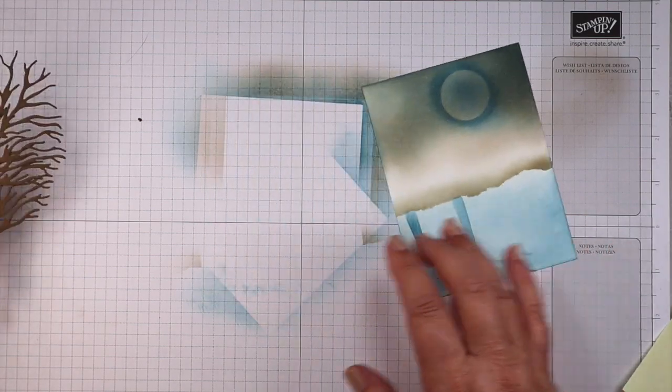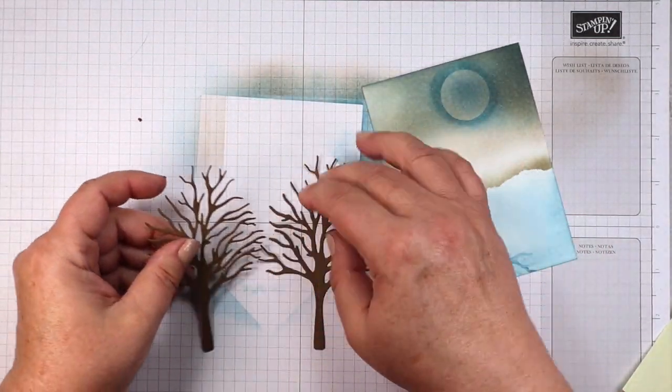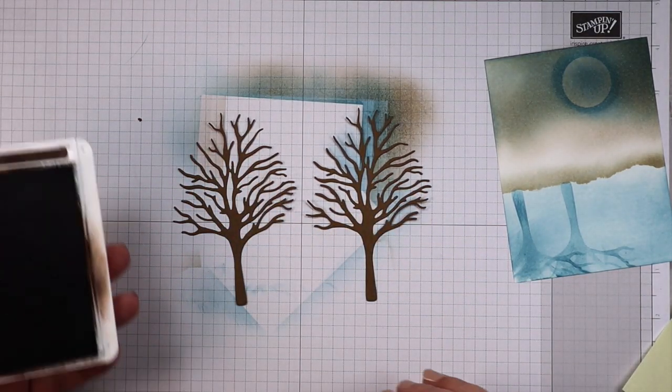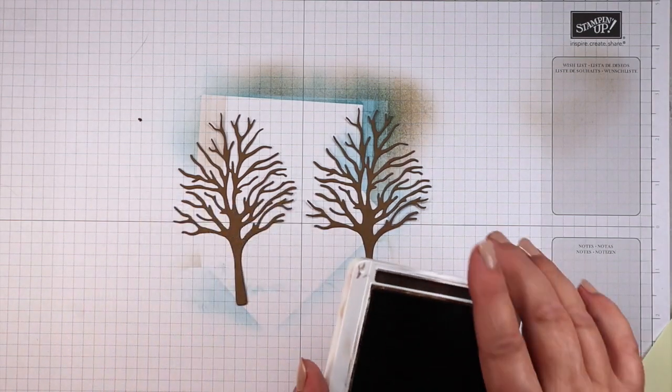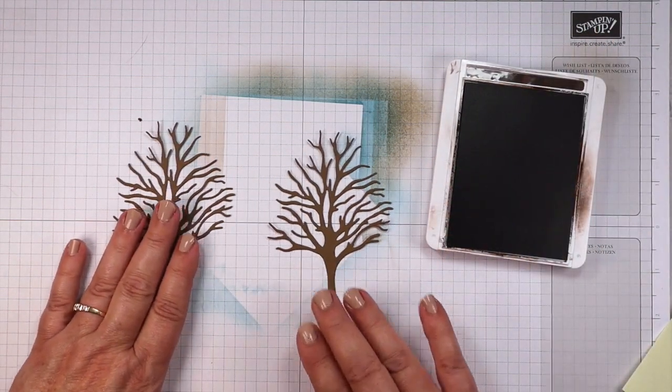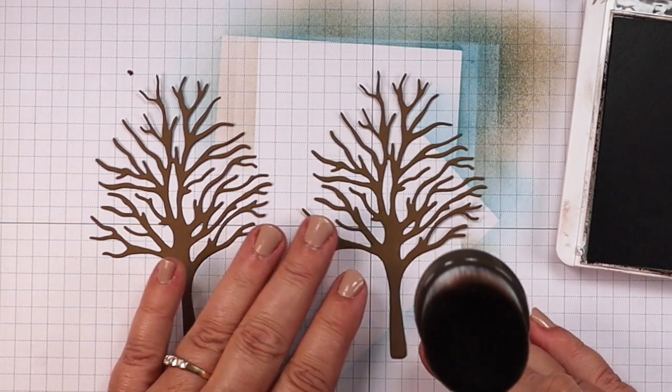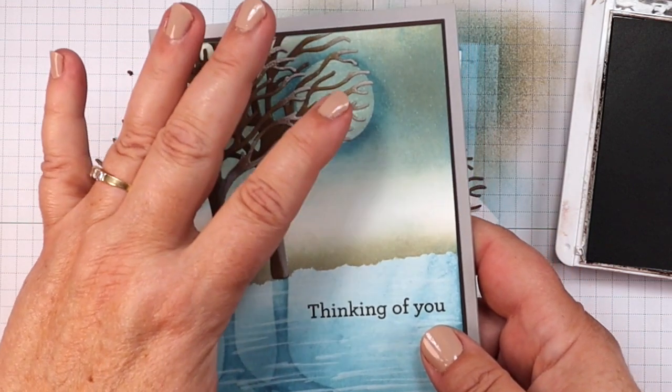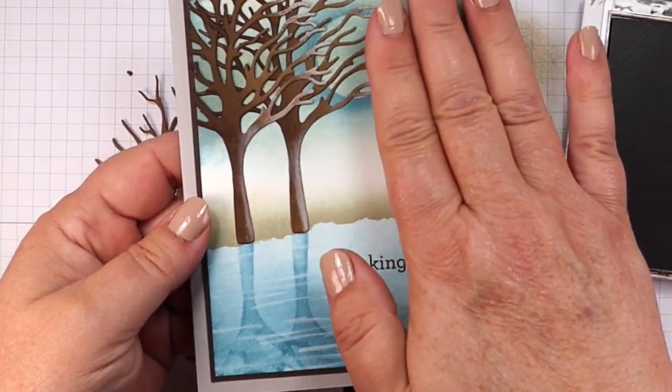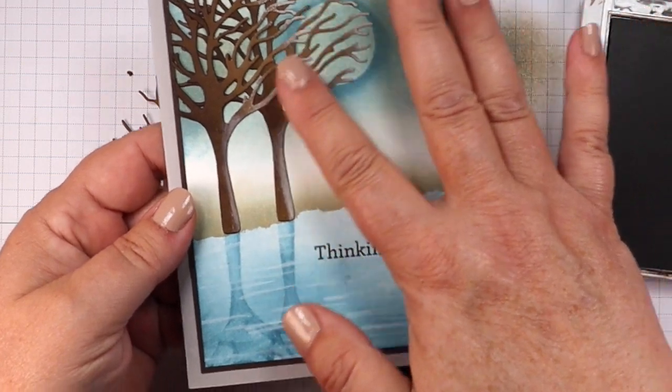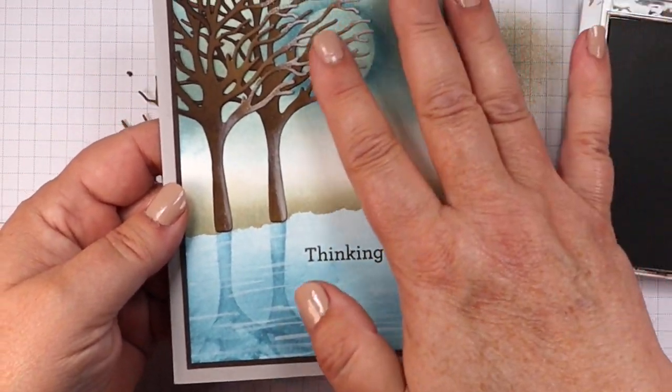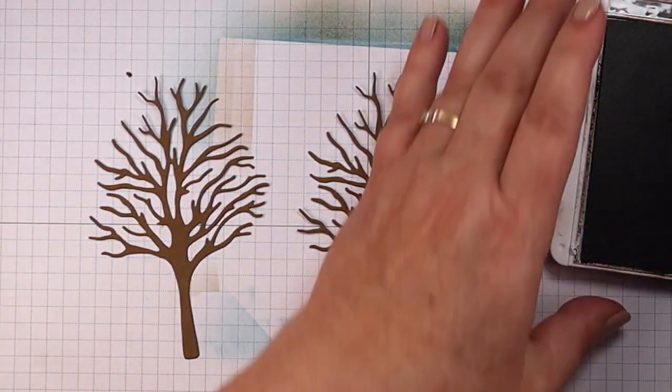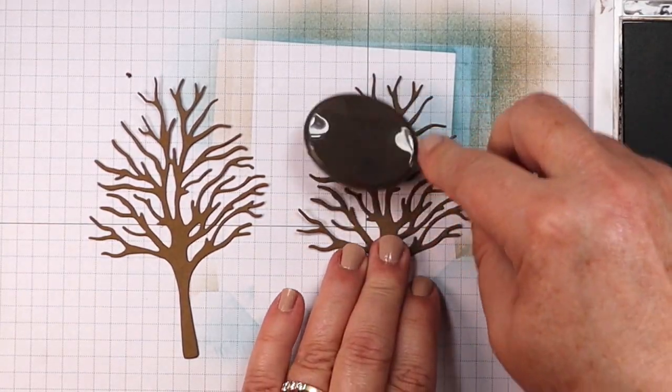And now it's time to get some color on our trees. I didn't want them just to be all soft suede, so we're going to blend some early espresso on our trees. Our trees are going to be to the left of the moon and so we want the moon to be showing some light on our trees, so we want our dark part to be on the left part of the trees because that's going to be our shadow side.